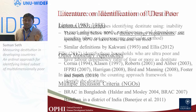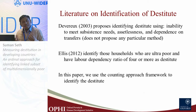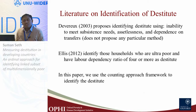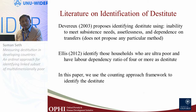In the literature on identification of destitutes, Devereux proposed identifying destitute using inability to meet subsistence needs, assetlessness, and dependence on transfers. Devereux — and also Barbara Harris-White — are among the few who acknowledge that destitution should be understood as a multidimensional concept rather than just a monetary one. Ellis took an interesting approach, identifying destitutes as those who are ultra poor and have a labor dependency ratio of three or more, presenting a clear hierarchy where destitutes are a subset of the ultra poor.